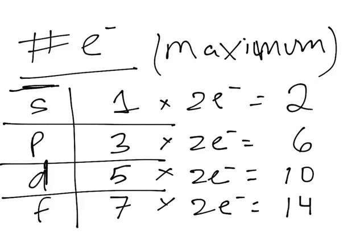If the subshell is full, let's say for S, you'll write it as 1s² or 2s² depending on the n value. It could be 1s¹ for hydrogen or 1s² for helium. It could be 2p⁶ if it's full, or 3d¹⁰, or for F it's 4f¹⁴. That's when the subshell is full, but it can be 2p⁵ or 2p³—it doesn't have to be full. It depends on the element you're writing the electron configuration for.